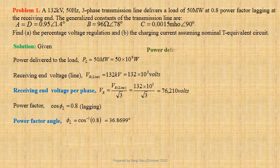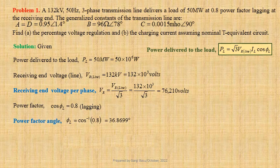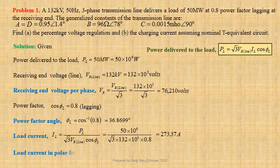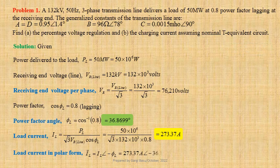Expression for power delivered to the load: PL equals root 3 times Vr line into IL cos phi L. Therefore load current IL equals PL divided by root 3 times Vr line into cos phi L. Using values we get 50 into 10 to the power 6 divided by root 3 into 132 into 10 to the power 3 into 0.8, that is equal to 273.37 ampere. Load current may be written in polar form as IL equals 273.37 ampere at an angle minus 36.8699 degree.